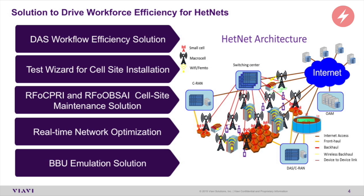How do you drive workforce efficiency so you can save on OPEX, have a better time to market, save on CAPEX, and deploy these networks much faster? We have multiple solutions depending on the type of network. We have a DAS workflow solution for deploying a DAS network. From a cell site deployment perspective, we've offered a test wizard solution on our Cell Advisor product. We have RF over SIPRI and RF over OPSI, which basically eliminates the need to climb the tower when doing maintenance, and our real-time network optimization tool, which allows you to remotely process and analyze data and make recommendations to your engineers.